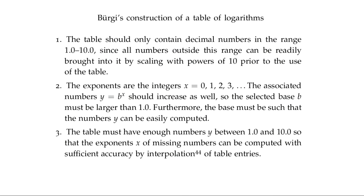Third principle: there must be enough values y between 1 and 10 so that if you're missing a number in the list, you can find its logarithm by interpolation. If a number lies between two given entries, you take the midpoint of the two logarithm values and declare that to be the log. But the spacing must be dense enough that this primitive process still gives very high accuracy. We will see in a moment what accuracy Bürgi was striving for.